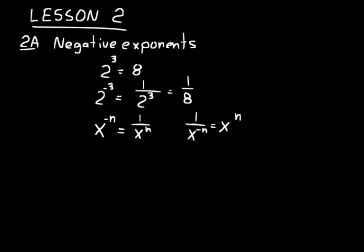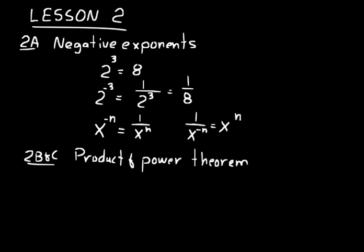If you have a negative exponent in the numerator and you want to make it positive, move the base and the exponent to the denominator and change the sign. If you have a value with a negative exponent in the denominator and you want to make it positive, move the base and the exponent to the numerator and change the sign.